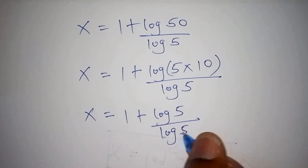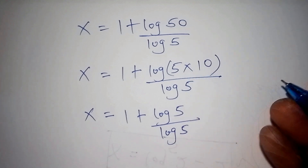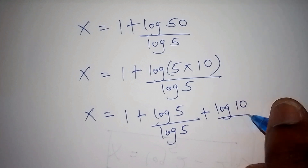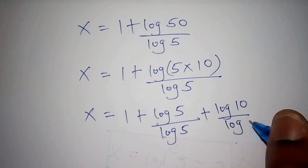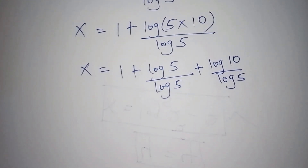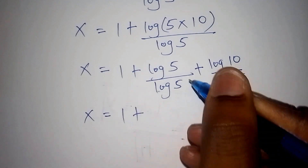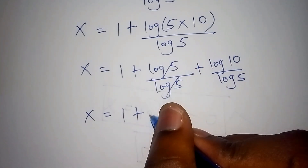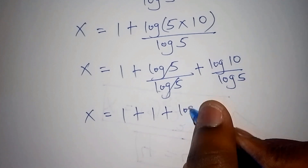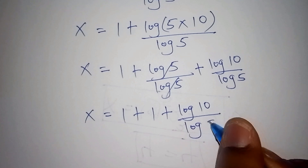We work it out the same way: 1 plus log of 5 all over log of 5, plus log of 10 all over log of 5. According to the law of logarithms, the multiplication sign changes to addition. The log of 5 and log of 5 cancel each other, giving 1. So x equals 1 plus 1 plus log of 10 all over log of 5.